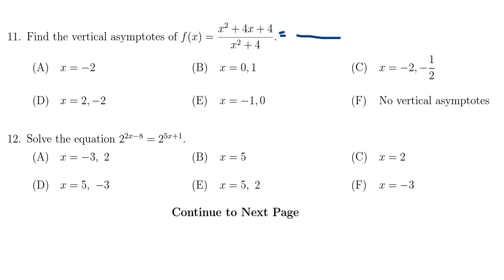In the numerator, x squared plus 4x plus 4, this is a perfect square trinomial. It'll factor as x plus 2 squared. Now in the denominator, x squared plus 4, that's a sum of squares. That's not going to factor using real numbers.